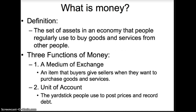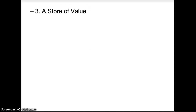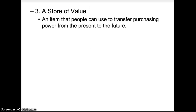If we were all using cigarettes as our form of money, we would have that common yardstick to measure the value of goods and services. The third function of money is store of value — an item that people can use to transfer purchasing power from the present to the future. Items like spices, gold coins, cigarettes, and green pieces of paper can be used today, tomorrow, next month, or next year.